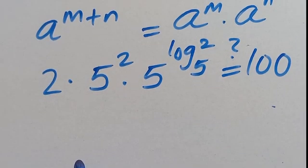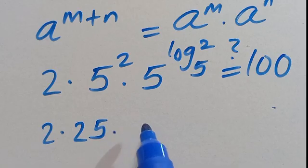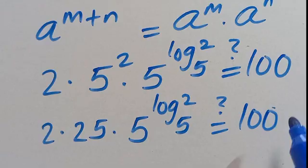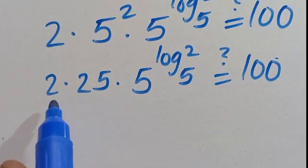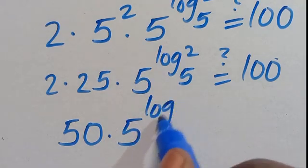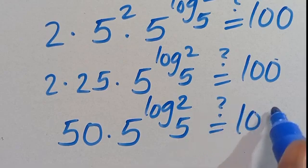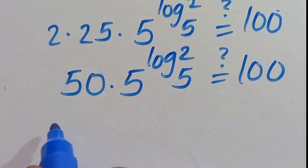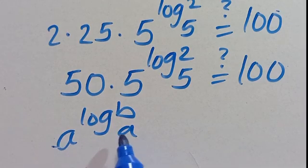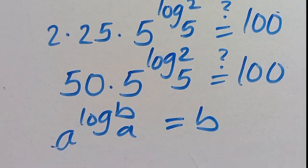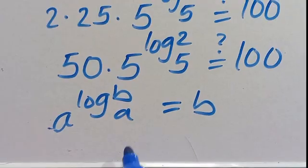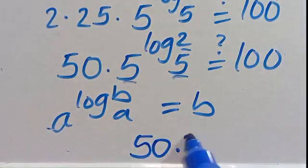So 5 to the power of 2 gives us 25. Then 2 times 25 gives us 50, multiplied by 5 to the power of log 2 in base 5, equals 100. Now recall that A to the power of log B in base A — where the base of the exponent matches the base of the log — the output equals B. So here, 5 to the power of log 2 in base 5 equals 2. Therefore, 50 times 2 equals 100. This confirms our answer.